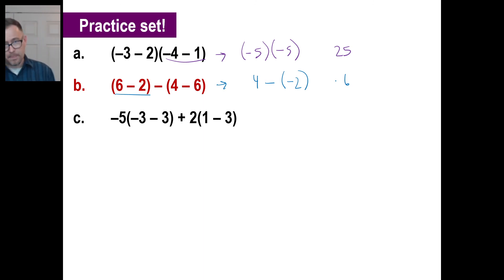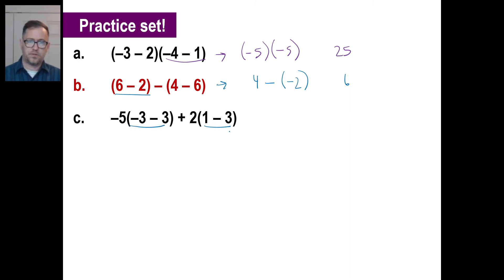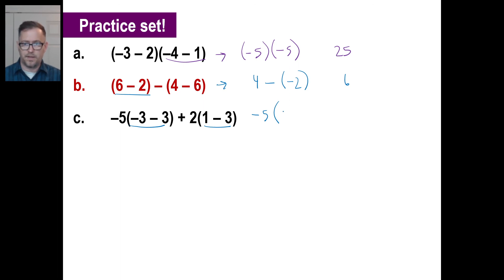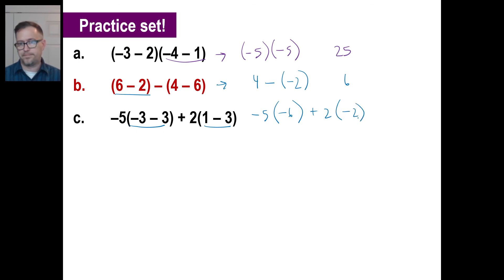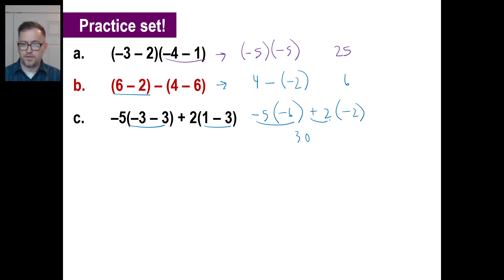Pause and try C. A little longer, but no big deal — we just do the same thing. I'm going to copy my negative 5. Negative 3 minus negative 3 is negative 6. Copy the plus 2. Then 1 minus 3 is negative 2. Now multiply: negative 5 times negative 6 is 30, and positive 2 times negative 2 is negative 4. 30 minus 4 is 26.